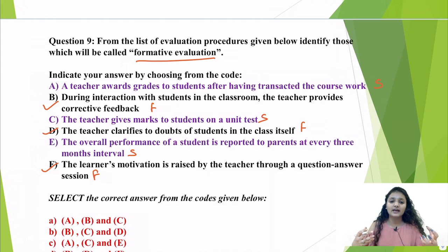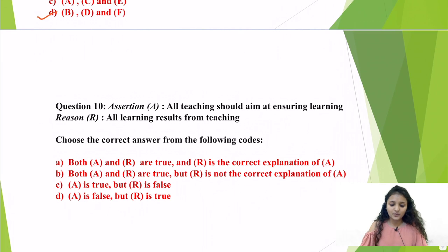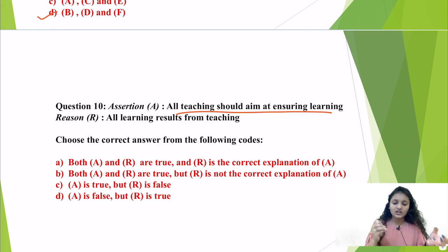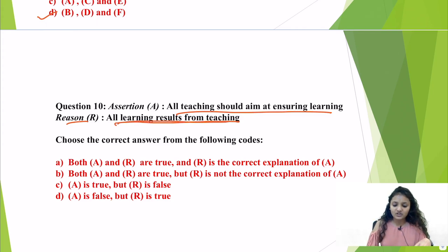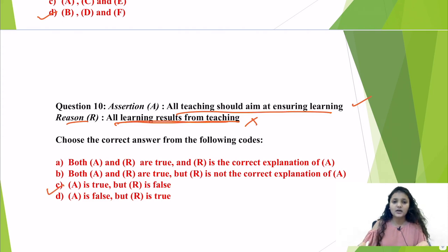Question number 10, the last question: Assertion — 'All teaching should aim at ensuring learning.' This is correct, as the teaching mechanism means a teacher wants transformation in students' behavior and learning to take place, making teaching interrelated with learning. Reason — 'All learning results from teaching' — this is not true, because learning also happens through experiments, observation, and prior experiences of an individual. So the assertion is true but the reason is false, which is option number C. Do follow this channel for more beneficial videos and ask queries on our Telegram group. Thank you.